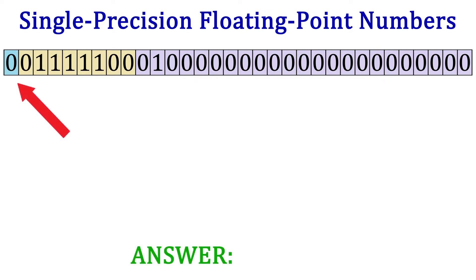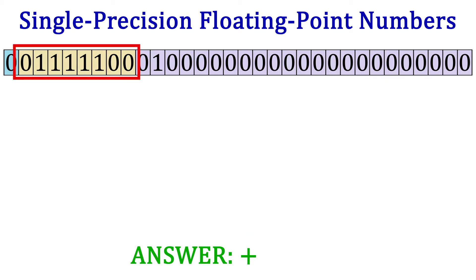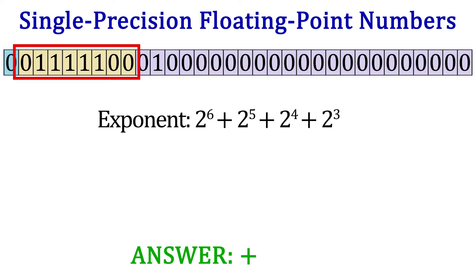So we have a single precision number — let's figure out what number this is. The sign bit is zero, meaning the number is positive. We're going to assume the exponent is a signed integer. Since it is in two's complement, we sum the place values of the ones: 2^6 + 2^5 + 2^4 + 2^3 + 2^2 = 124. Since this number is biased by 127, we subtract 127 from 124, getting negative 3.